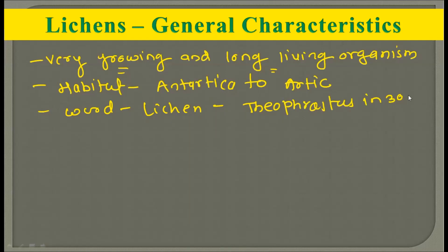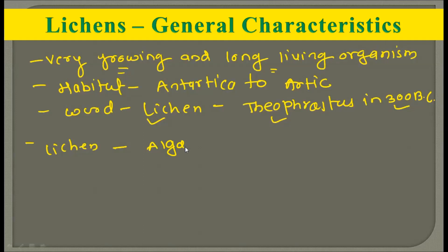The word 'lichen' was first used by Theophrastus in 300 BC. These lichens are formed by the close association between algae and fungi. Lichens are not a single organism — they are the combination of two different partners: one of them is algae and the second is fungi. So lichens are literally the combination of algae and fungi.